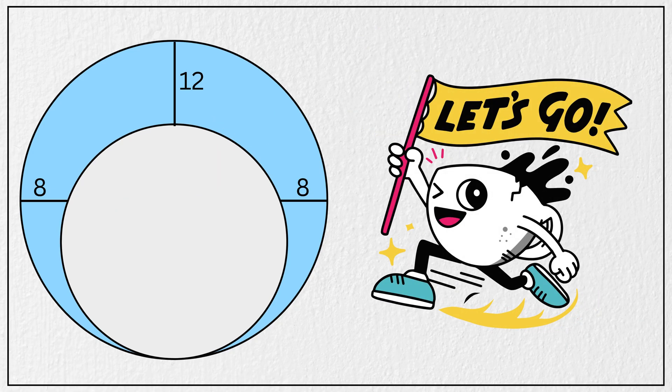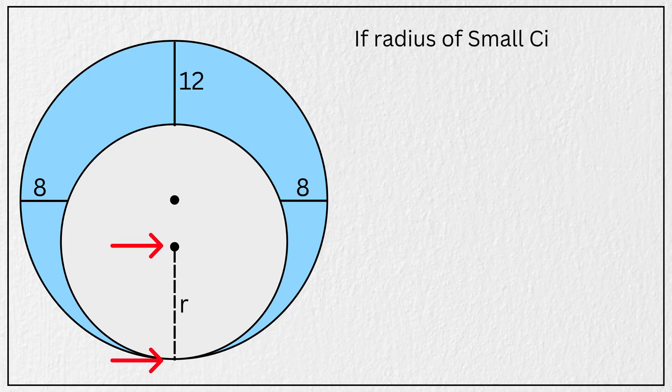Alright let's solve it together, but before we begin, first let's mark the centers of both circles and define the radius of the smaller circle as r units. Now if the radius of the smaller circle is r units, then its diameter is simply 2 times r.